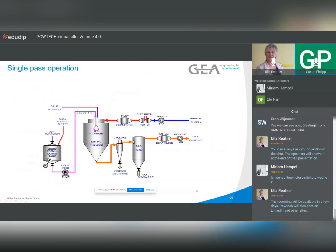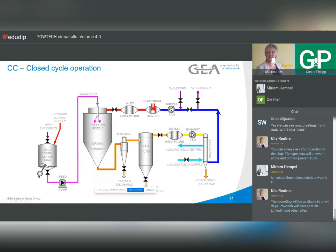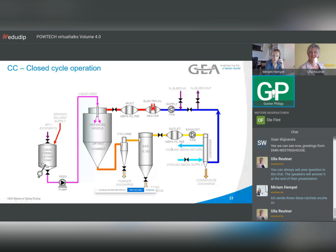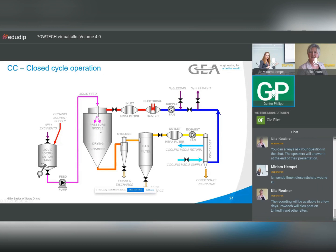A single pass system has the air coming in, an electric heater, a HEPA filter — normally for pharmaceutical applications — then the drying chamber where feed comes in, followed by a cyclone, back filter, and HEPA filter on the outlet, with two fans. The opposite is a closed cycle where the gas is recirculated to conserve inert gas like nitrogen. In a closed cycle, a condenser is required to remove the evaporated solvent.